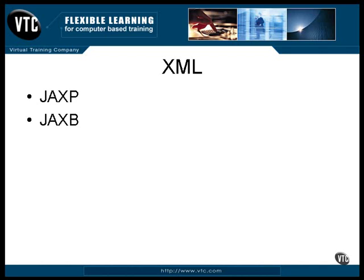But SAX is fast and memory efficient. JAXB is the Java API for XML Binding. You can use it to map XML to and from Java classes. You can specify the relationship and it will compile into code that performs the actual mapping for you.